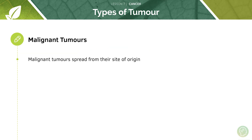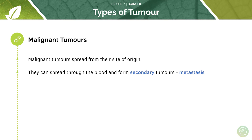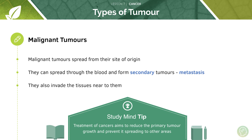The difference is that malignant tumours spread from their site of origin, whereas benign tumours stay in the same place. Malignant tumour cells break through the basement membrane, meaning they can spread through the blood and also the lymphatic system. They can therefore form secondary tumours, which we refer to as metastases. Treatment of cancers aims to reduce the primary tumour growth, because this is the tumour capable of spreading to other areas. If we can destroy this primary tumour, we reduce the chance of it causing secondary tumours.